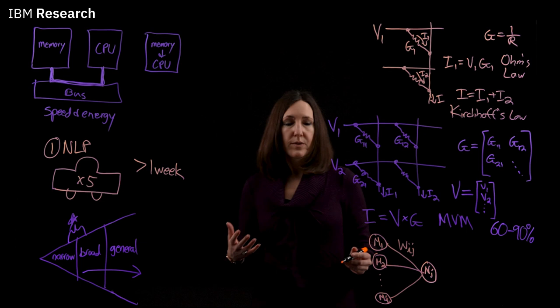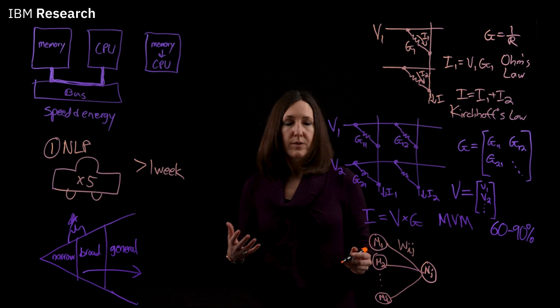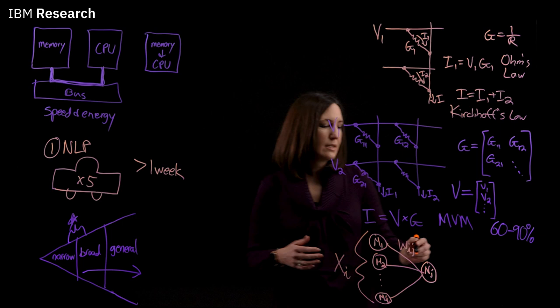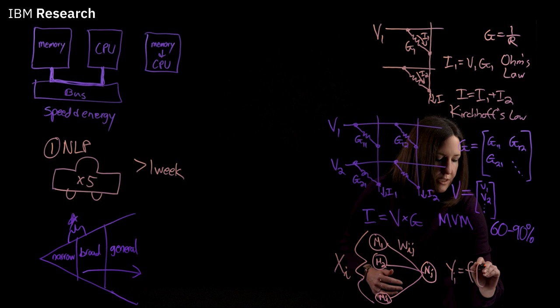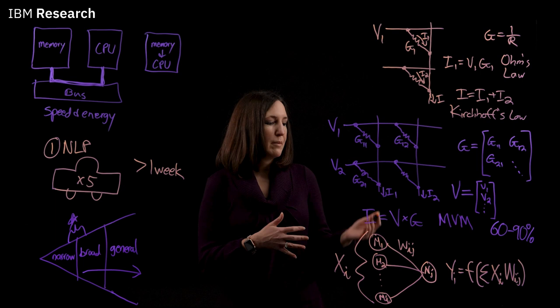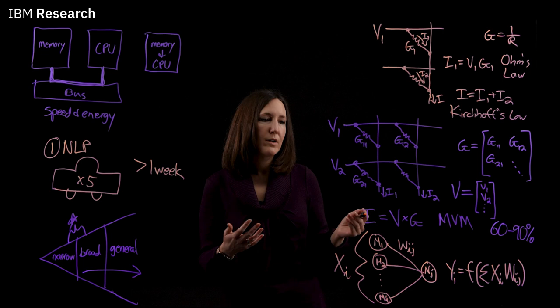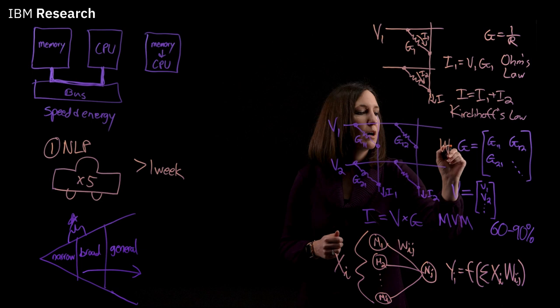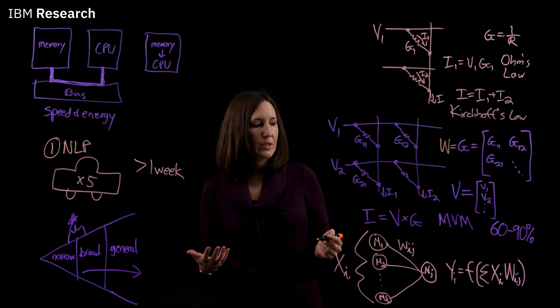And if we have our input to our neural network layer as X, we can express the output from the layer mathematically as this equation. Now we have to map this equation onto our memory array. The first thing we can do is take all of our conductances and program them such that our conductance matrix G is equal to our weights of our layer.